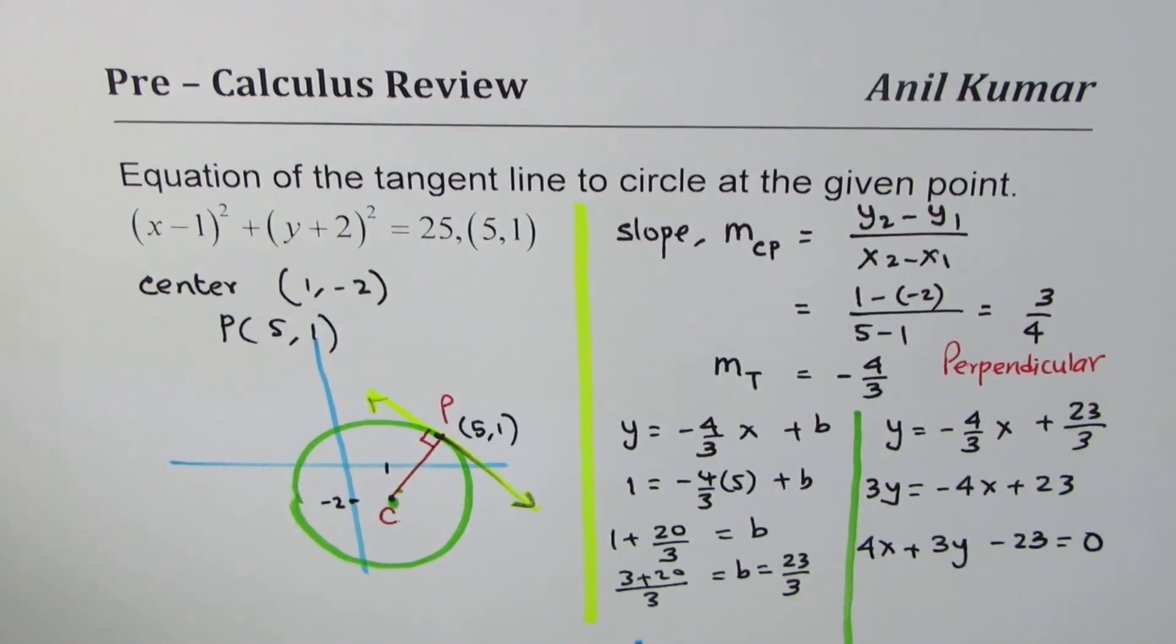So you could write the answer in standard form or in slope-intercept form if it is not given or specified in the problem. But I hope with this you understand the process of finding the equation of a tangent line to a circle at a given point.